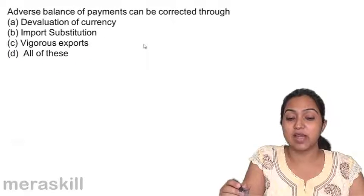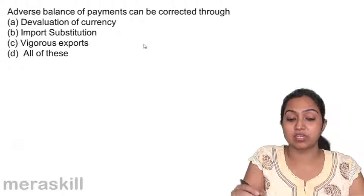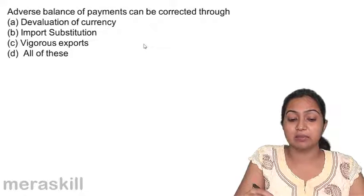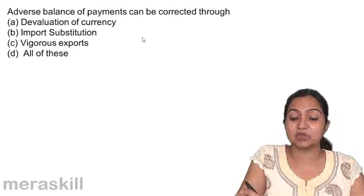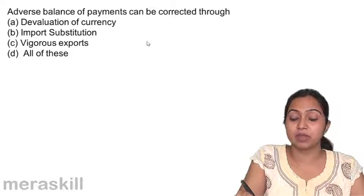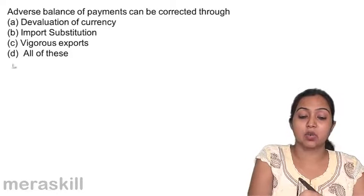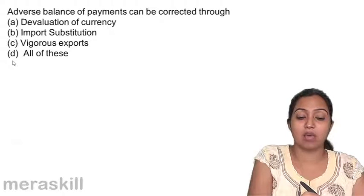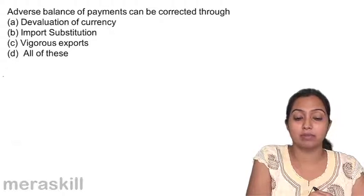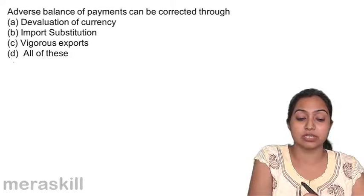Adverse balance of payments can be corrected through devaluation of currency, import substitution, and vigorous exports. If you have an adverse balance of payments, you have to apply all these measures to correct it.